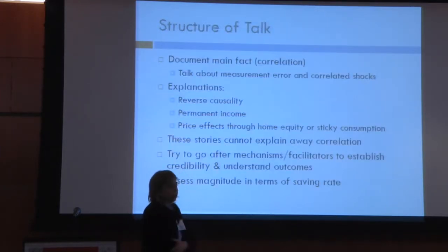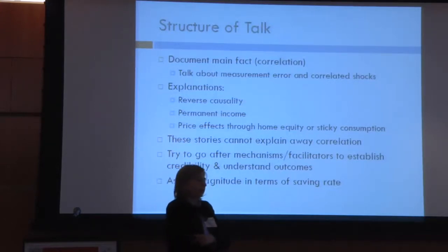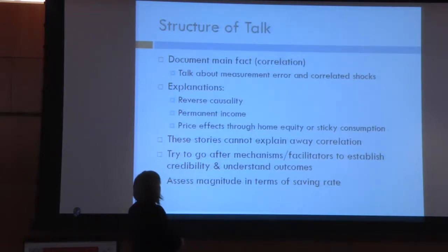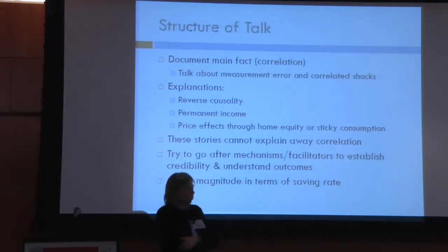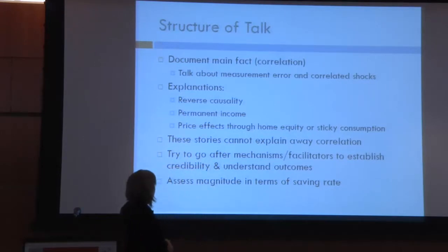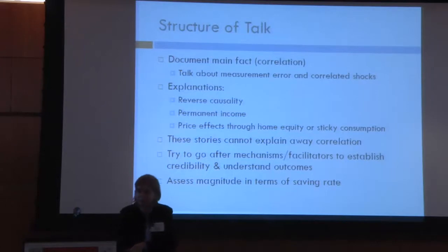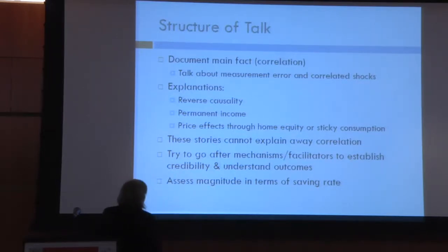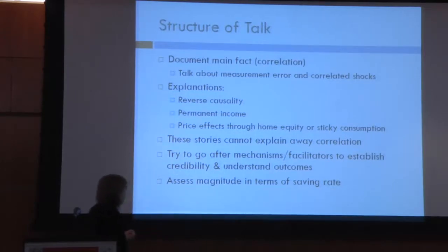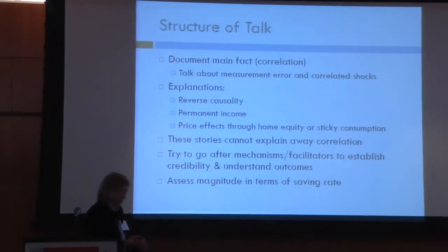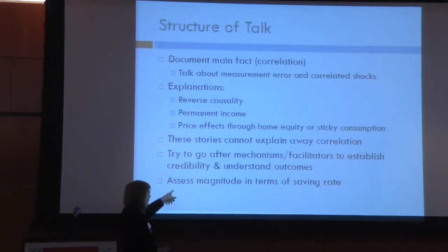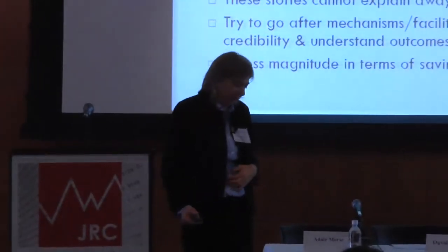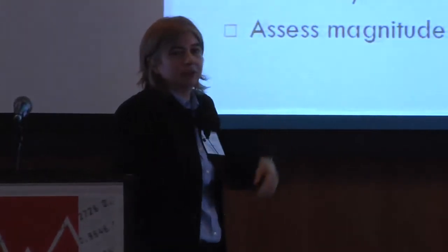The structure of the talk: I'm going to document the correlation between consumption at the top and consumption in the middle class or beneath the top. Then we're going to go after explanations to try to pin down where this correlation comes from — permanent income, reverse causality, price effects, wealth effects through home equity — to eliminate arguments. We'll come out showing these stories cannot explain this correlation. Then we'll go after other mechanisms through debt and access to credit to understand how these consumption correlations could be causally related. Finally, we'll speak to the magnitude through the savings rate, as Chris Carroll hounded us about.